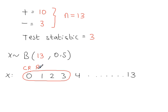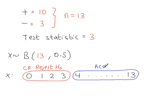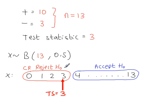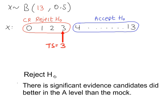Critical region: reject H0. 3 is the critical value — it's where the critical region starts from. Which means the values from 4 to 13 are all in the acceptance region. This is only ever done in terms of H0: reject H0 or accept H0. The test statistic is 3, clearly that's in the rejection region, so the conclusion is reject H0. There is significant evidence candidates did better in the A-level than the mock.